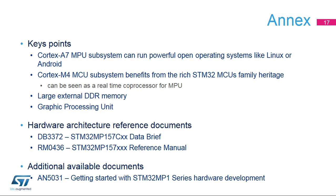The main points to note from this presentation: the STM32 MP15X embeds a Cortex-A7 core able to run powerful operating systems like Linux or Android, as well as a Cortex-M4 core able to run real-time tasks or act as a coprocessor to reduce the Cortex-A7 load or power. The STM32 MP15X always needs an external DDR memory to run the operating system. The STM32 MP157 line includes a GPU which provides rich graphic capabilities for the operating system.